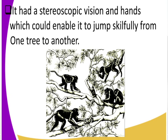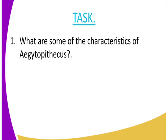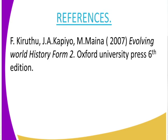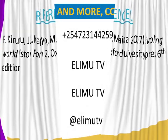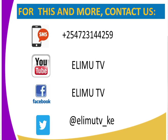That is how man evolved — that is the first stage of evolution of man, and we have looked at the features of Aegipithecus. For more detailed characteristics, use the textbook 'Evolving World History' from Oxford University Press, sixth edition. Learners, get in touch with us via our SMS line, YouTube page, Facebook page, and Twitter account at ElimuTV Kenya.